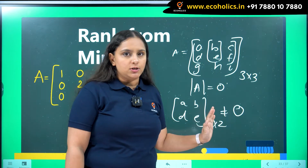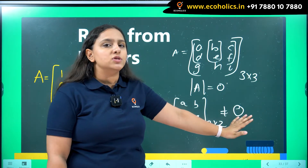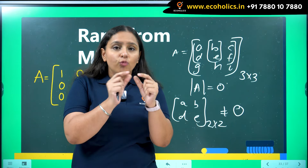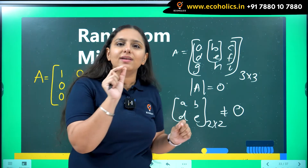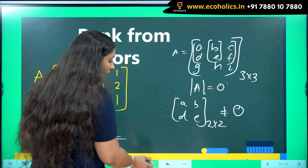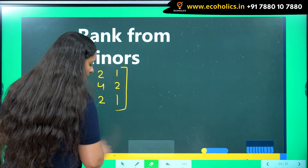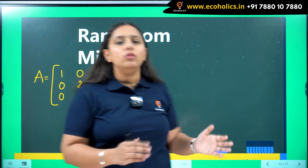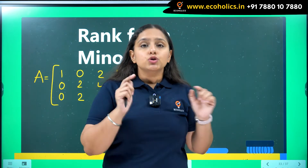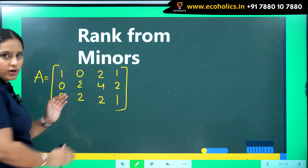If all 2×2 minors are also zero, you go to 1×1 — so rank will be at least 1. A 1×1 minor is just a single scalar, and as soon as you get a non-zero scalar, rank equals 1, which is the minimum. For a rectangular matrix, you take sub-parts of it to start with a square — you leave one row or one column so that it converts into a square matrix.